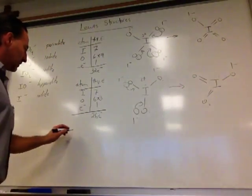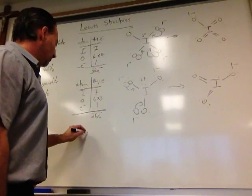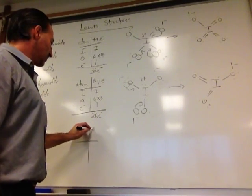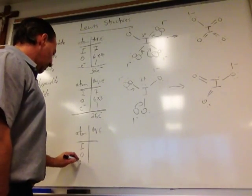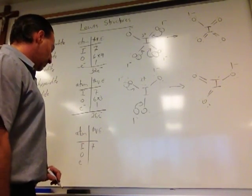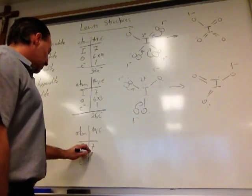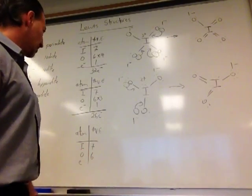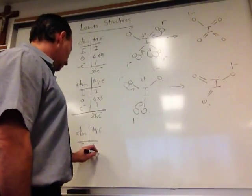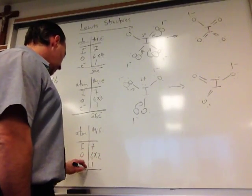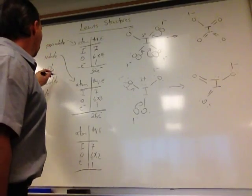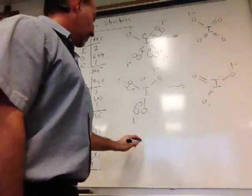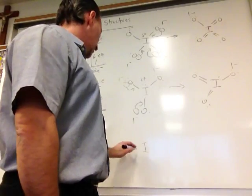We have an iodite, 7 for iodine, 6 electrons for oxygen, and there are 2. And then 1 electron for the negative charge.